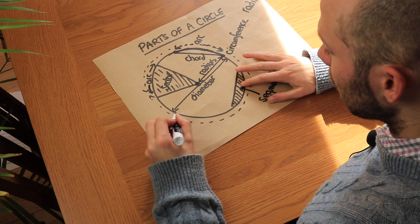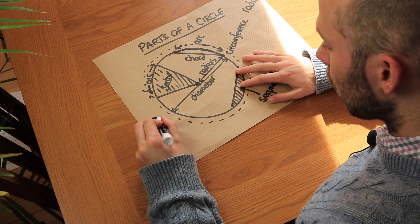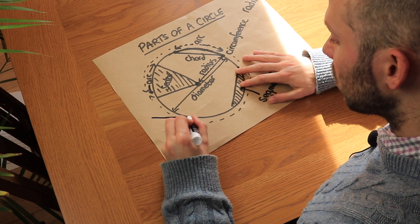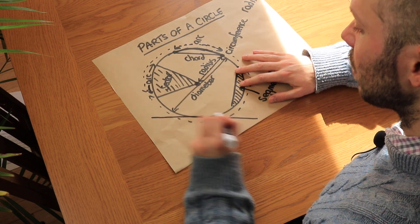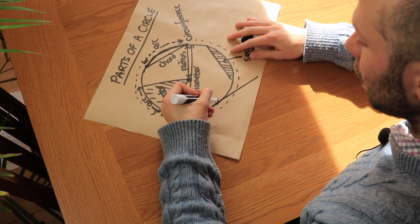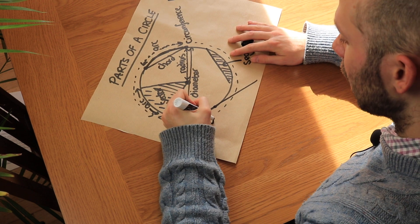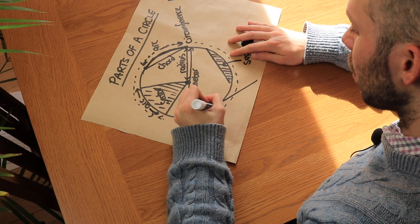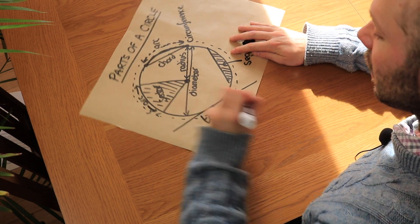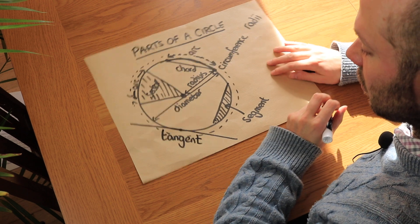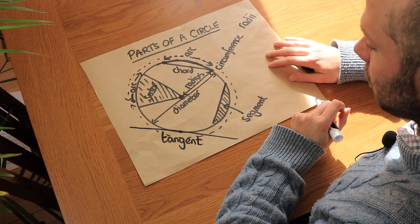If there is a line which touches the circle at a single point, then that line is known as a tangent to the circle.